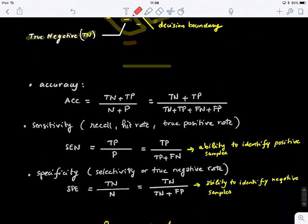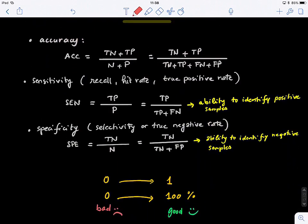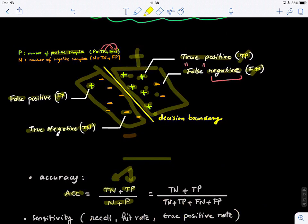Now, how we define those. So the accuracy is defined as true negative and true positive. So we look only at the correctly classified points divided by the number of samples, N plus P. So N plus P is like all points together.